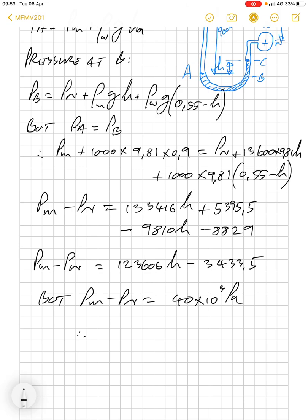Therefore, we can make H the subject of the formula. That will give us 40 times 10³ plus 3,433.5 divided by 12,360.6.